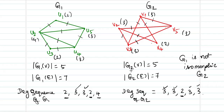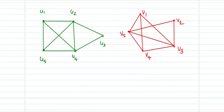If any of the first few conditions is violated, we can conclude the graphs are not isomorphic. Now let us move on with the third example.